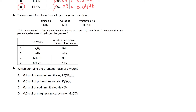Three nitrogen compounds are given. In the first two, hydrogen is lighter than nitrogen so nitrogen takes the major share of total mass. To find the Mr: ammonia is 17, hydrazine is 32, and the last one is 14 + 2 + 16 + 1 = 33.